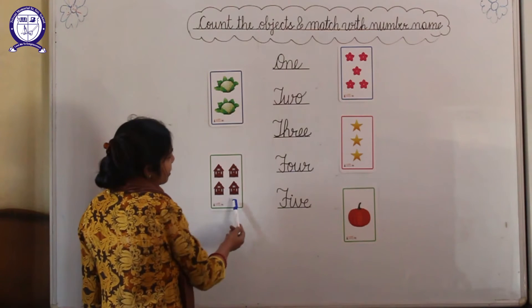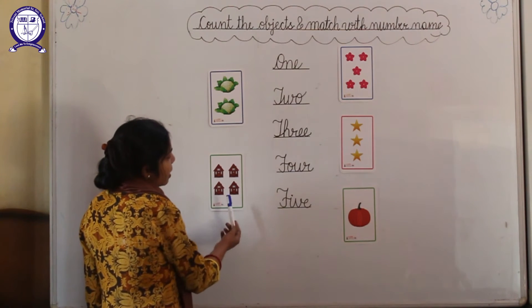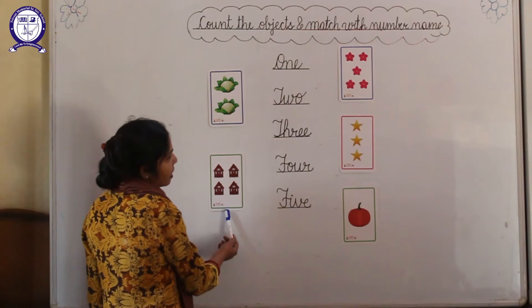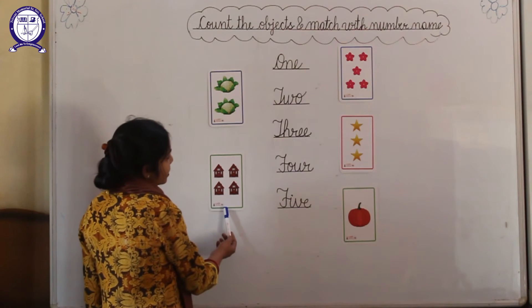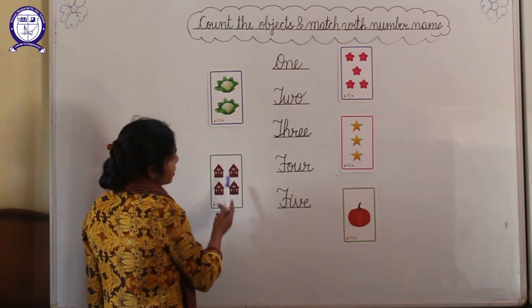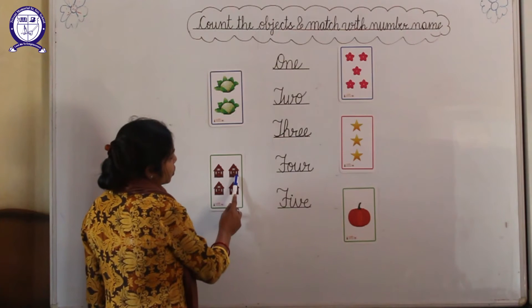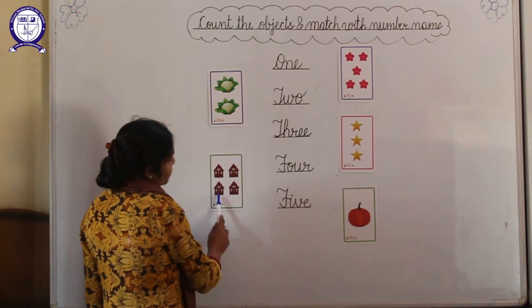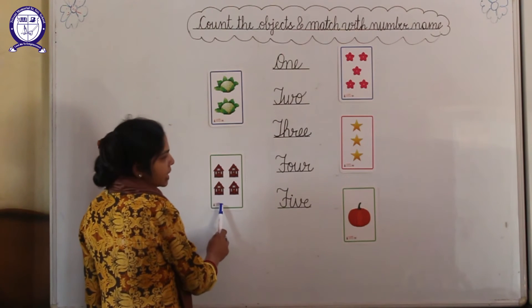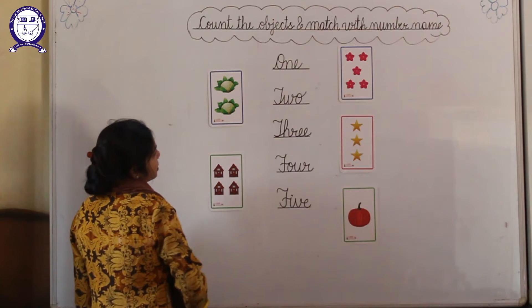Next beta, which picture is this? These are hearts. And how many hearts are there? 1, 2, 3, 4. These are 4 hearts.